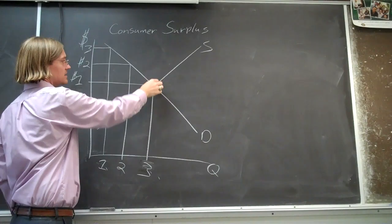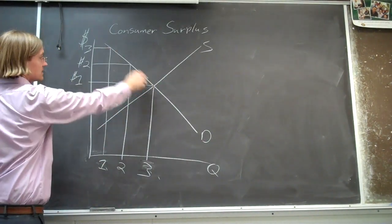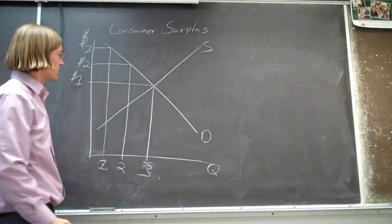So you like this less and less as you are consuming more of these hamburgers. You are willing to pay less and less, the law of demand, downward sloping demand curve.